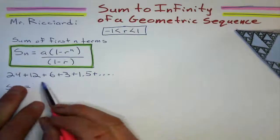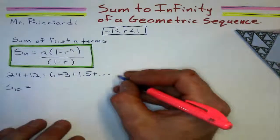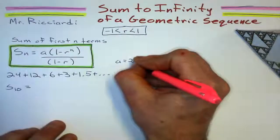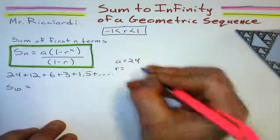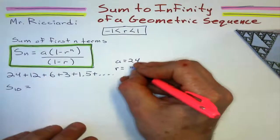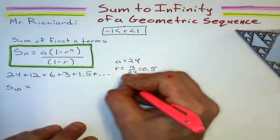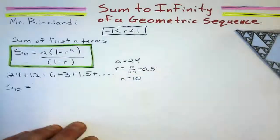Let's see, the 10 terms of this sequence, the first term of this sequence is going to give me 24. The common ratio is going to give me 12 divided by 24, which gives me 0.5. And I want to know the first 10 terms.